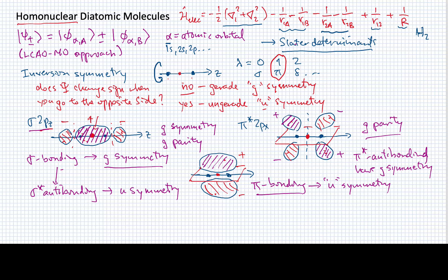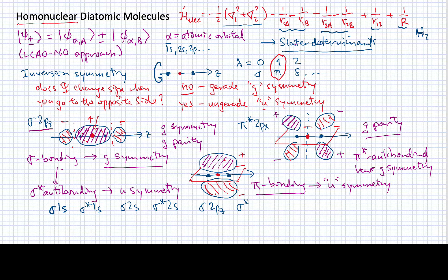We can create a whole different labeling scheme for these orbitals. In order of increasing energy, using the scheme we've already introduced: sigma 1s, sigma-star 1s, sigma 2s, sigma-star 2s, sigma 2pz, sigma-star 2pz, then pi 2px or y — there are two of them and they're degenerate — and pi-star 2px or y.